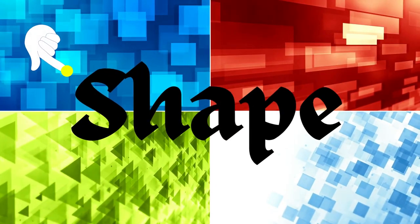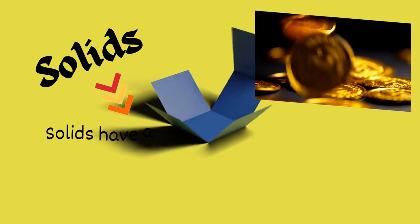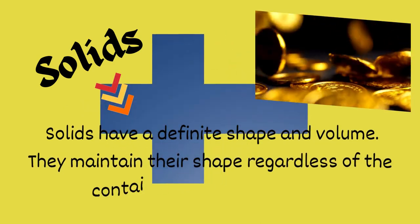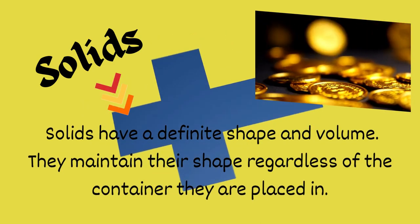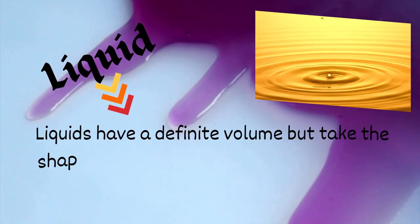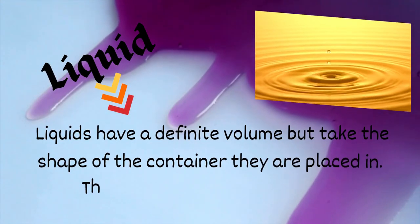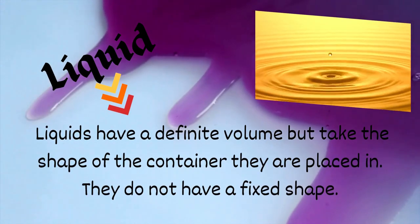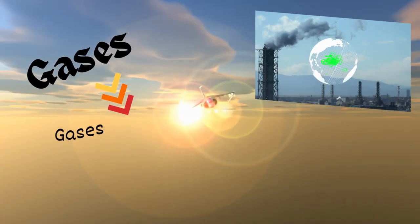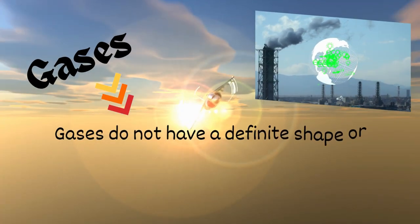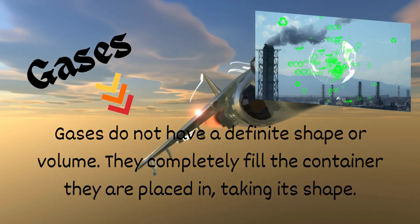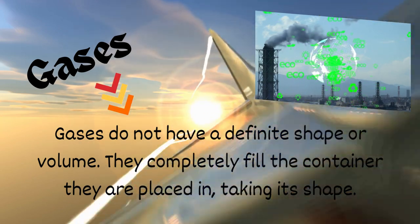Shape. Solids have a definite shape and volume; they maintain their shape regardless of the container they are placed in. Liquids have a definite volume but take the shape of the container they are placed in — they do not have a fixed shape. Gases do not have a definite shape or volume; they completely fill the container they are placed in, taking its shape.